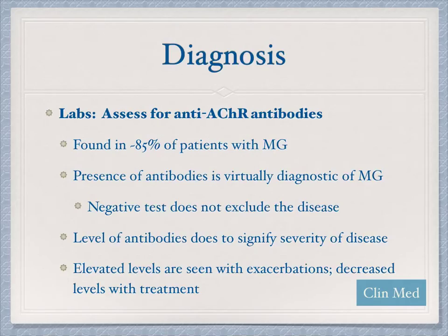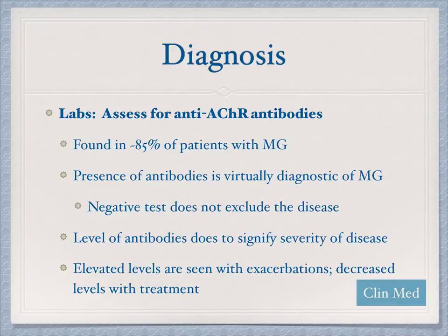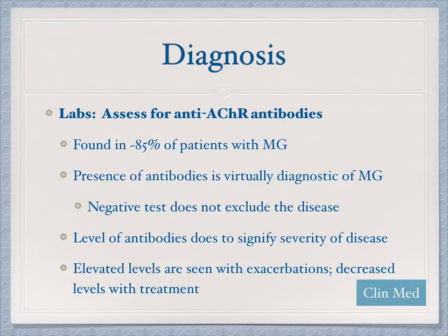Diagnostic studies can help determine if a patient has myasthenia gravis. You can assess for anti-acetylcholine receptor antibodies, which are typically found in 85% of patients. However, a negative test does not exclude the disease — about 15% of patients with the disease won't have a positive test. The level of antibodies does not indicate severity, though you can see elevated levels during exacerbations and decreased levels during remissions.